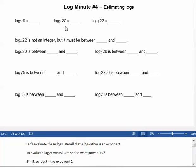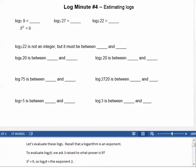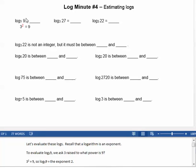Let's evaluate these logs. Recall that a logarithm is an exponent. To evaluate log base 3 of 9, we ask 3 raised to what power is 9? 3 squared equals 9, so log base 3 of 9 equals the exponent 2.